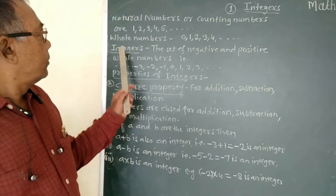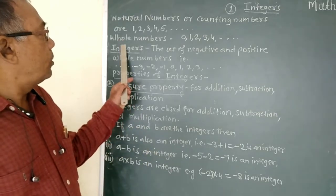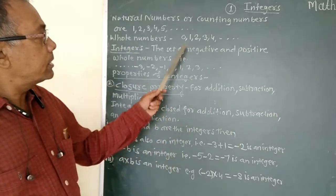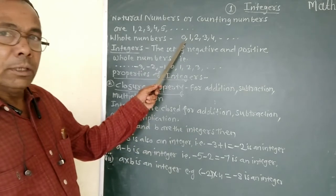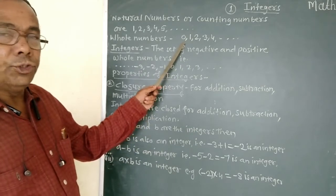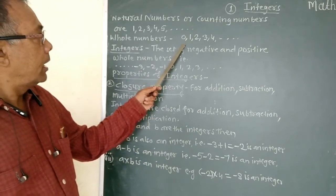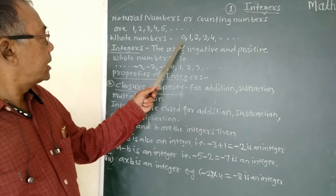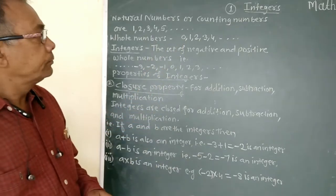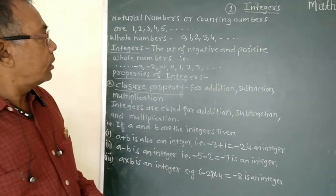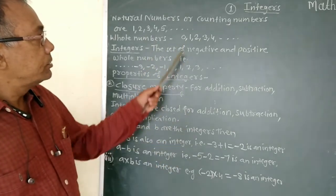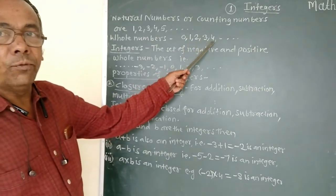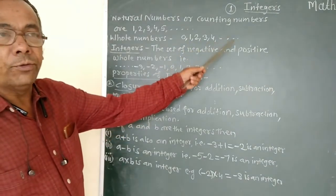Now we will see whole numbers. Whole numbers start from 0, and the set of whole numbers is 0, 1, 2, 3, 4, 5, etc.